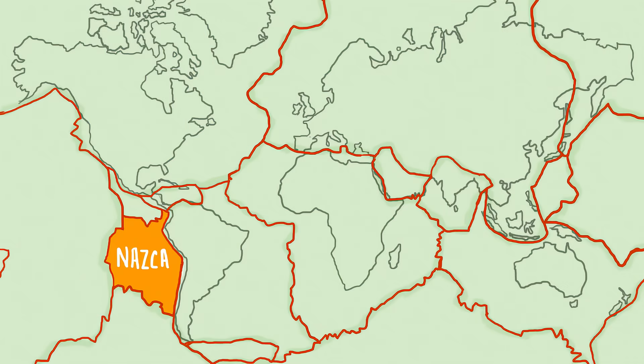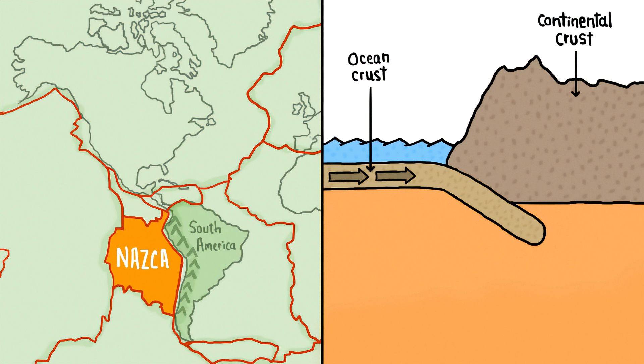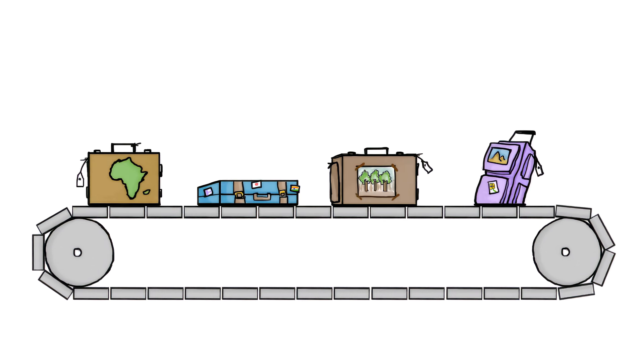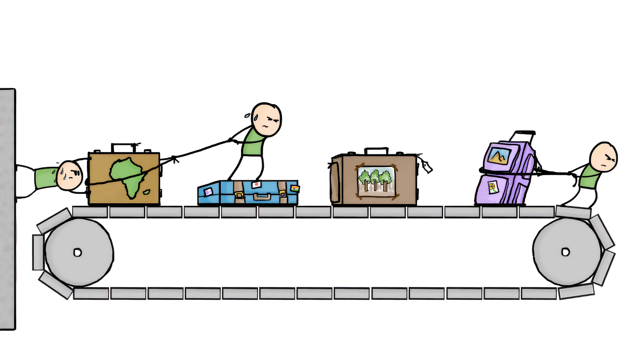For example, the Nazca plate, a chunk of ocean crust off the west coast of South America, is cruising eastward at about 10 centimeters per year, while the mantle underneath it oozes along at just five. Neither tectonic plates nor luggage can move faster than the belts they're riding on, unless something else is helping to push or pull them along.